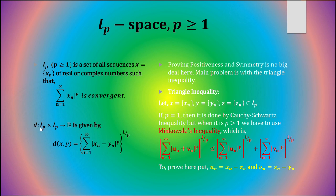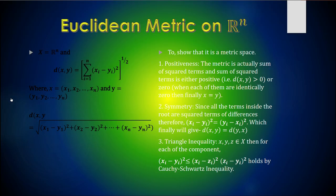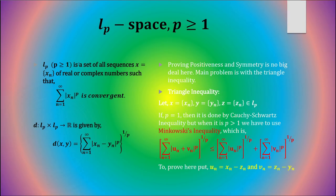The key conceptual shift here is that, unlike the previous Euclidean example where a point was a vector in Rn, in LP space each point is actually a sequence. Specifically, it is a sequence of the type where the series formed by raising each term to the power p is convergent.